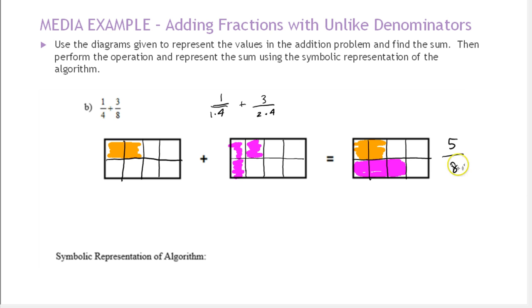So now let's think about the symbolic representation of an algorithm. So if we don't want to draw pictures and cut them into all these pieces, what could we do? Now, we said before that we can always, I could have cut the 4 pieces each into 8 pieces. That would give me 32 pieces. The 8 pieces into 4 pieces, which would give me 32 pieces.